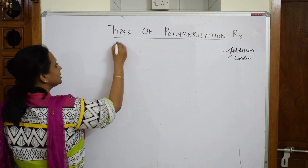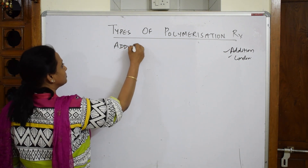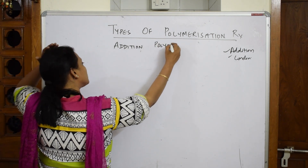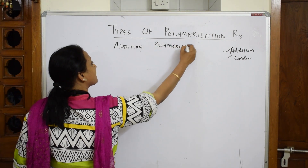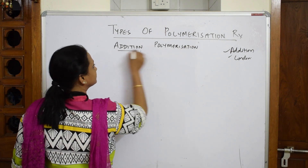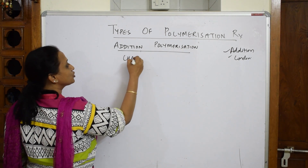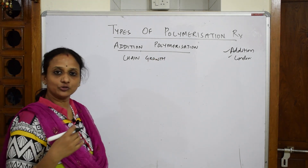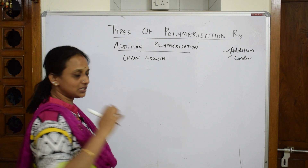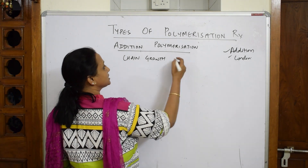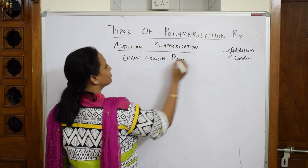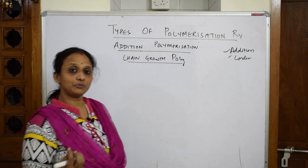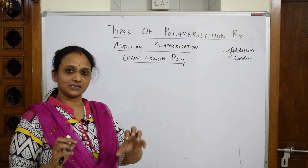When we speak about addition polymerization, you have to remember three important concepts. Addition polymerization is also called chain growth polymerization because there is an increase in the length of the polymeric chain - it keeps propagating.